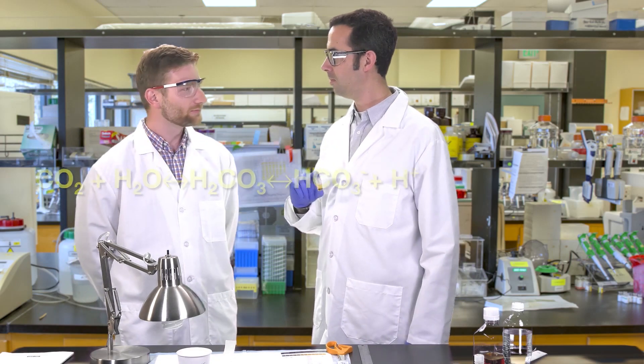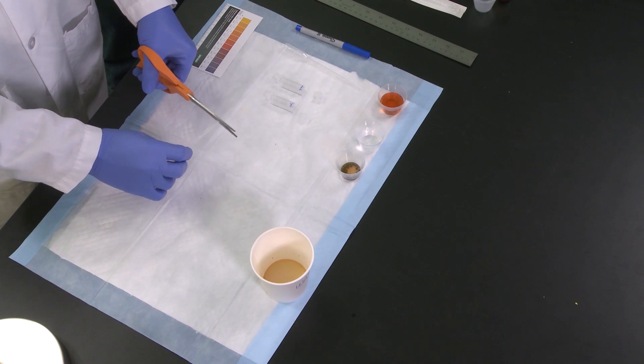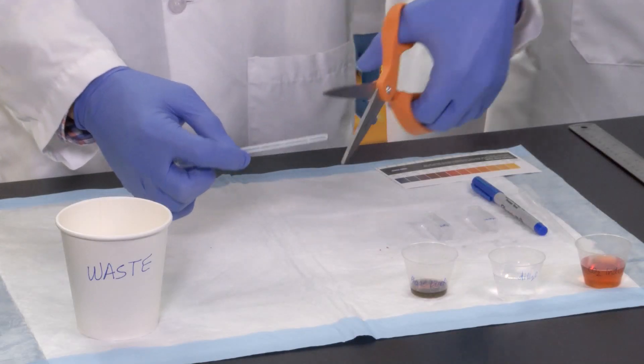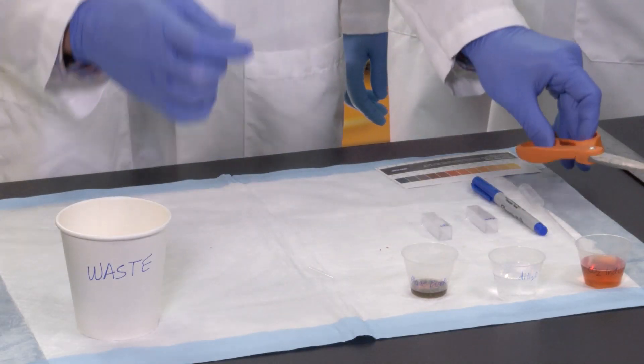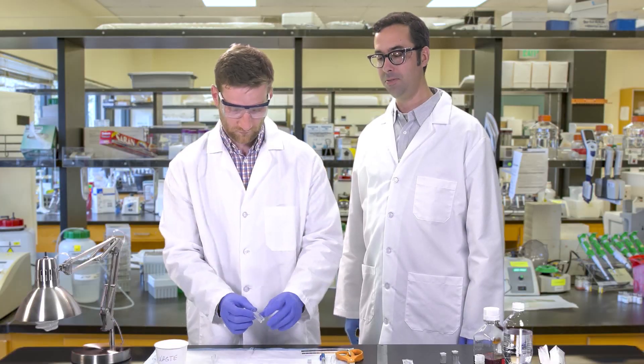You will need to transfer 10 algae beads into each cuvette. You can do this by cutting the tip of a disposable pipette at the 100 microliter mark, then cutting it at a diagonal to make a scoop. Don't forget to label your cuvettes.